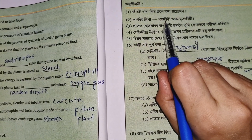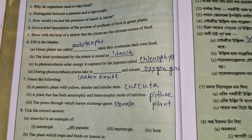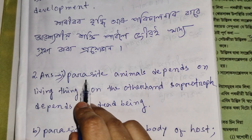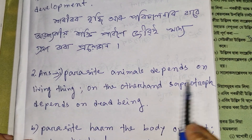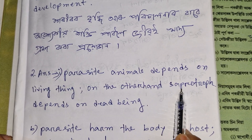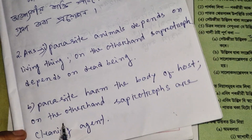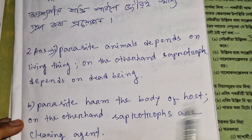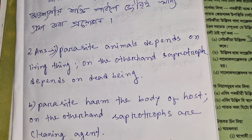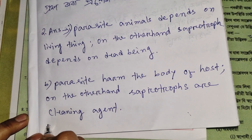A parasite is an organism that depends on a living thing for its food. A saprophyte, on the other hand, depends on dead matter. A parasite harms the body of the host, whereas a saprophyte acts as a cleaning agent.